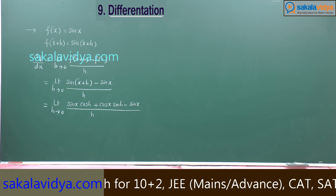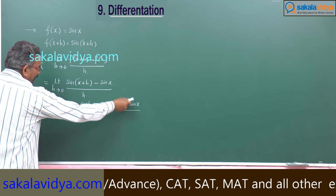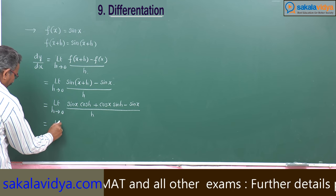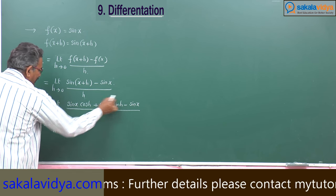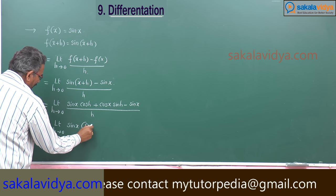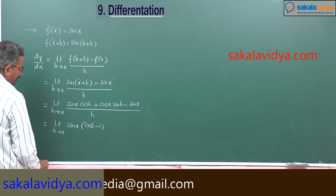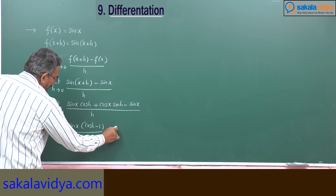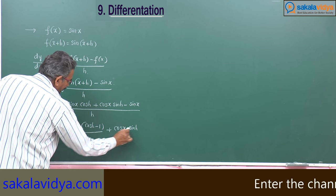Now, let us take sin x common from the first and third terms. So: limit h tends to 0 of [sin x(cos h minus 1) by h] plus [cos x into sin h by h].